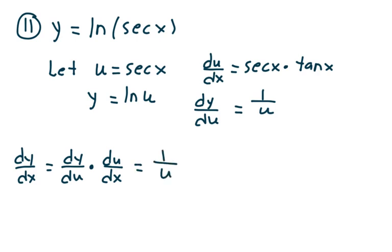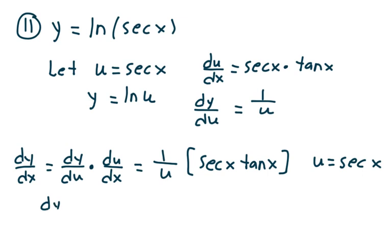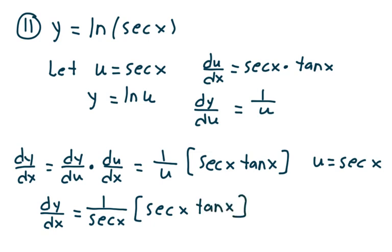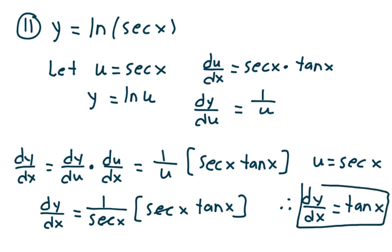dy/du is 1 over u, and du/dx is secant x tangent x. Remember that u is equal to secant x, so dy/dx is equal to 1 over secant x times secant x tangent x. But the secant x's cancel, and we conclude dy/dx is equal to tangent x. And that's how we do problem number 11.